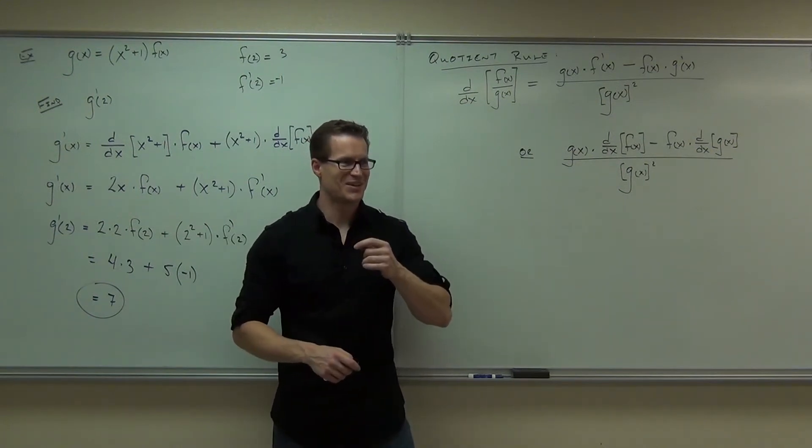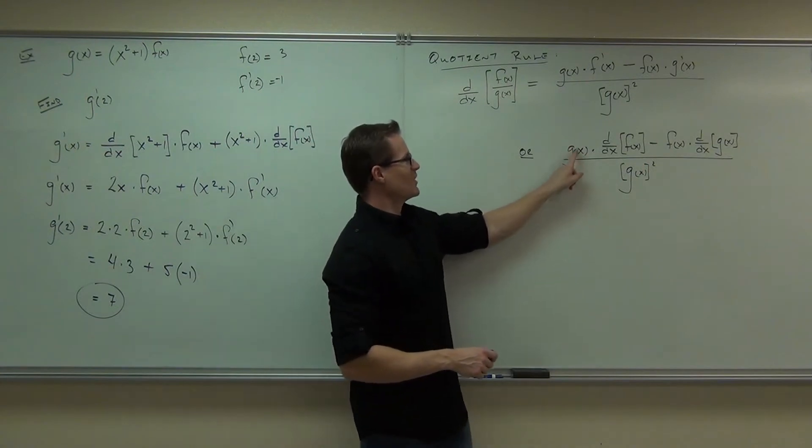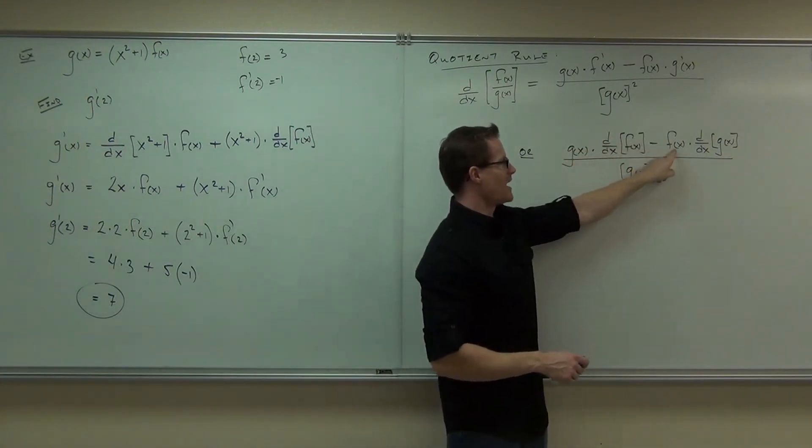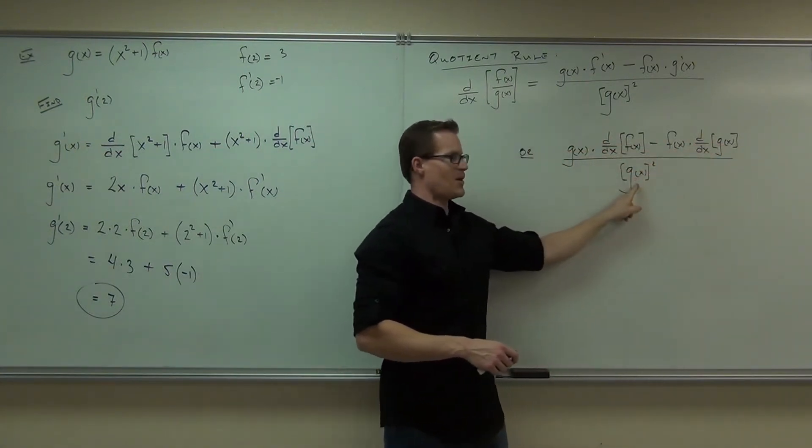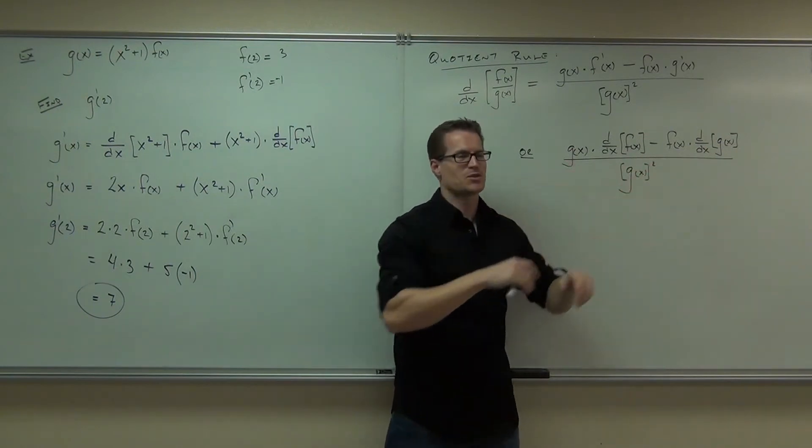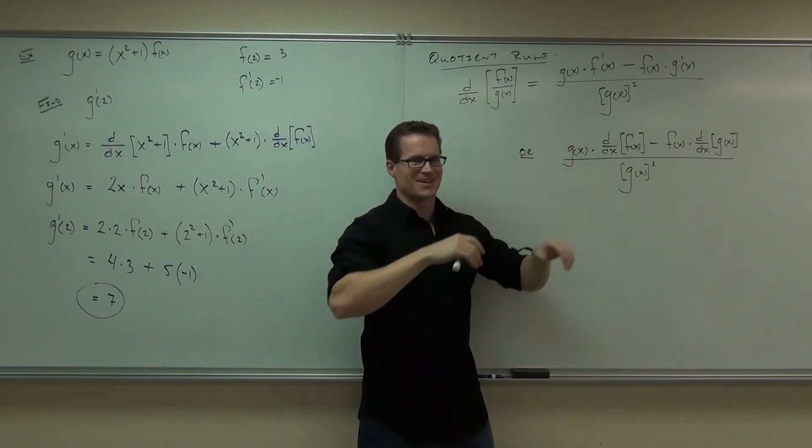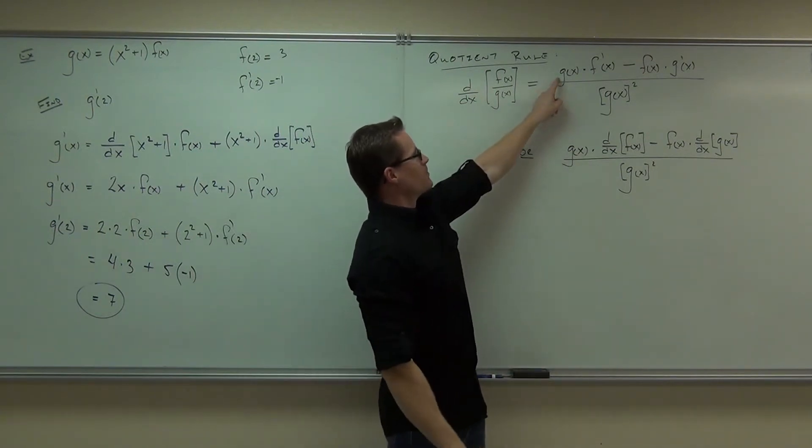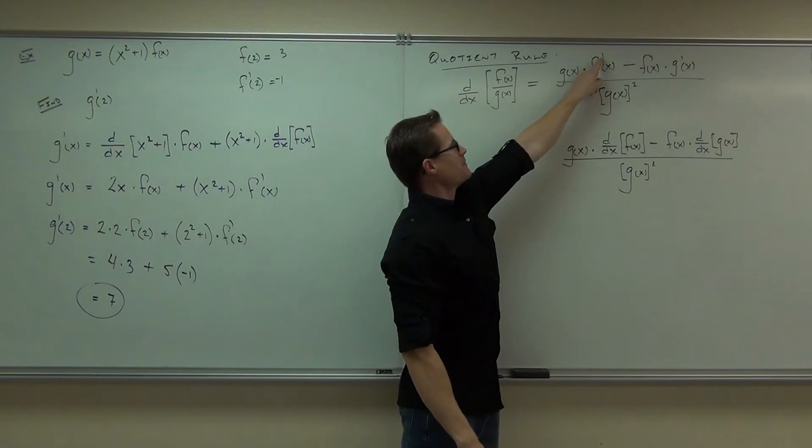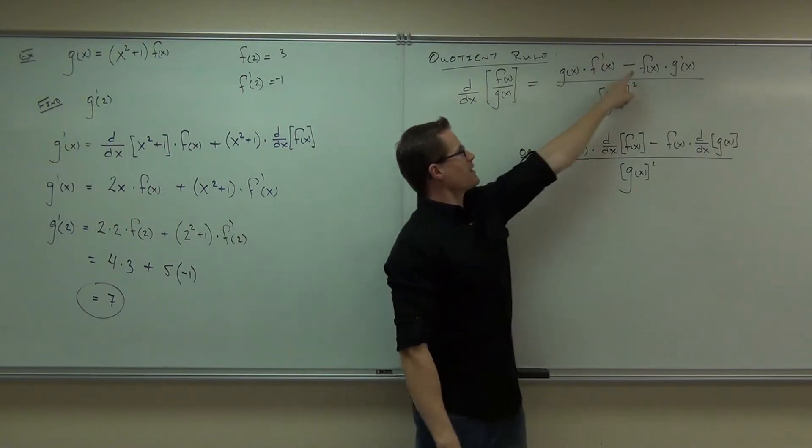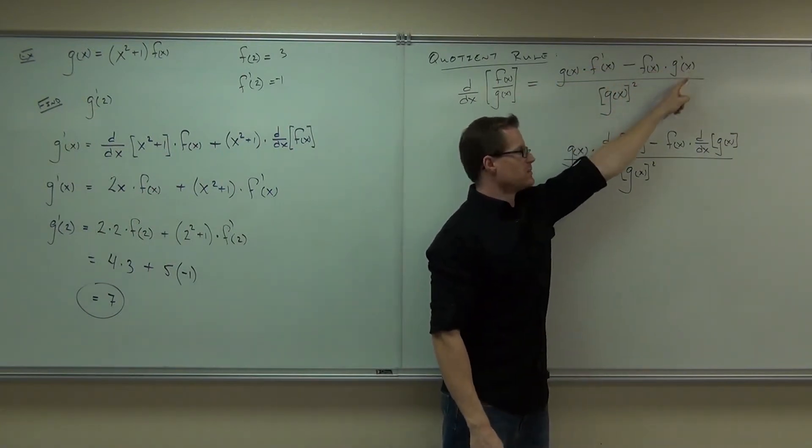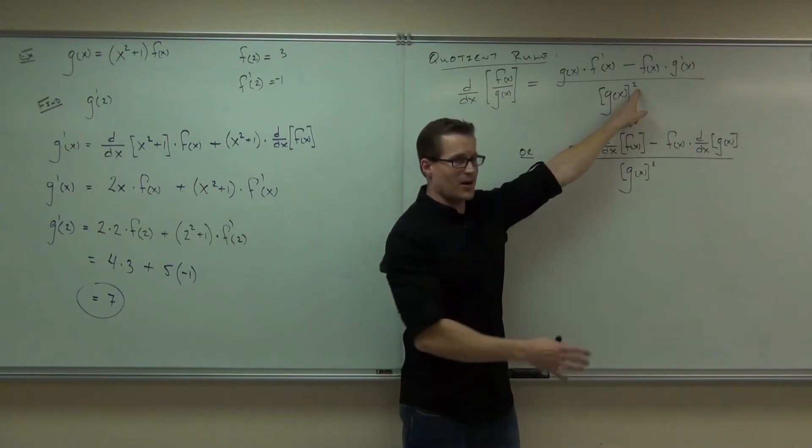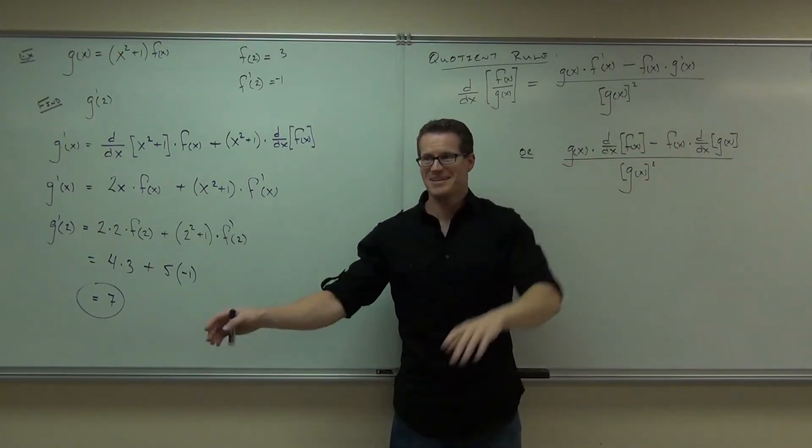That's right, very cool. Low D high minus high D low, square the bottom and away we go, but you have to do this with it, otherwise it's a Harry Potter version of this. Yeah, low D high minus high D low, square the bottom and away you go.